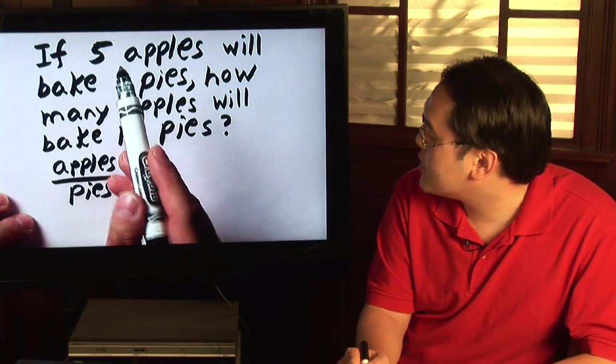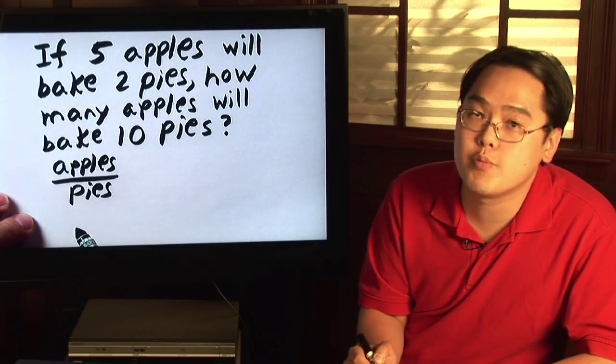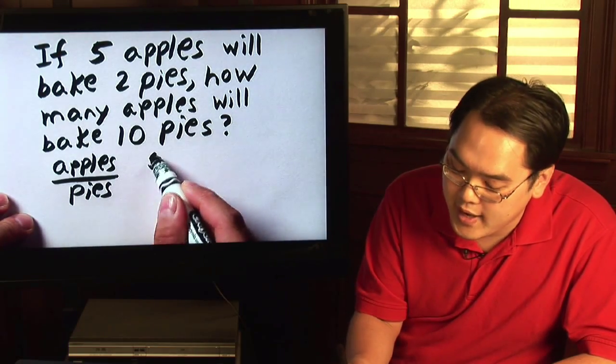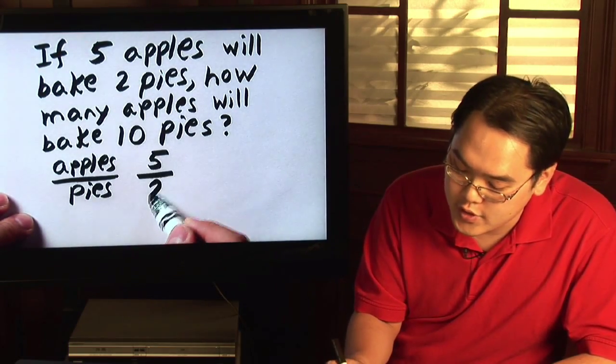The first comparison is that you have five apples and two pies. So basically you would have five for apples over two for pies.